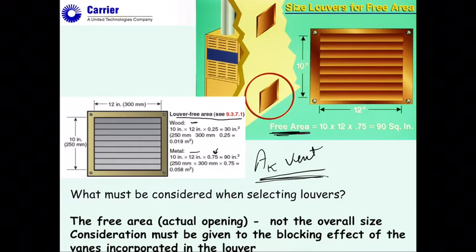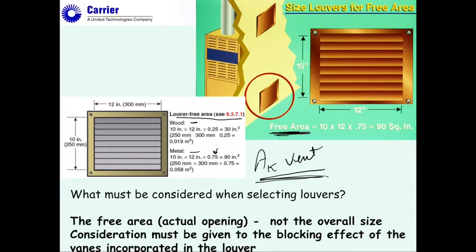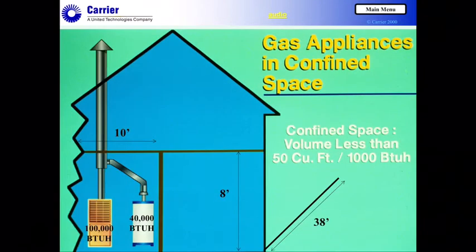For that 10×12 metal louver with a 75% ratio, you get 90 square inches of free area. Remember, you need no less than 100 square inches of free area, so don't forget to account for louver blocking when sizing openings.